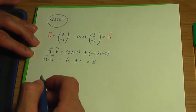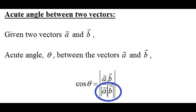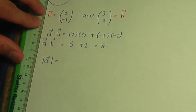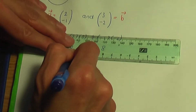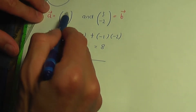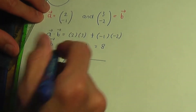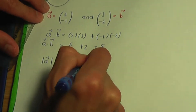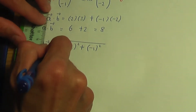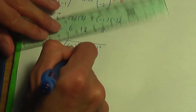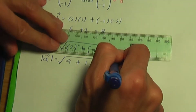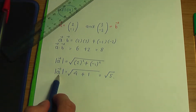Now let's also find the modulus of A and the modulus of B. To work out the modulus of A, take the square root of the sum of the squared components. So it's the square root of two squared plus minus one squared, which is the square root of four plus one, giving us root five. So root five is the modulus or magnitude of A.